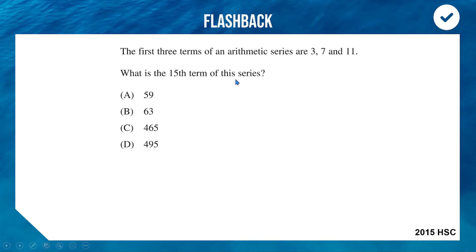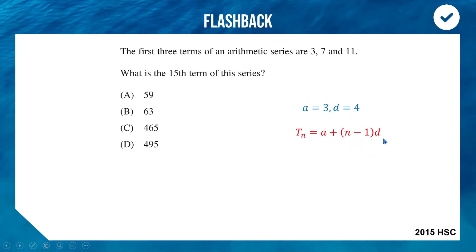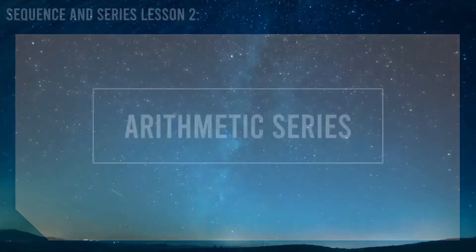Pause the video and have a go yourself. For this arithmetic series, our starting term a is 3 and the common difference d is 4. To find the 15th term we use the nth term formula, setting n equal to 15: we get 3 plus 14 times 4, giving an answer of 59. Well done if you said option A.